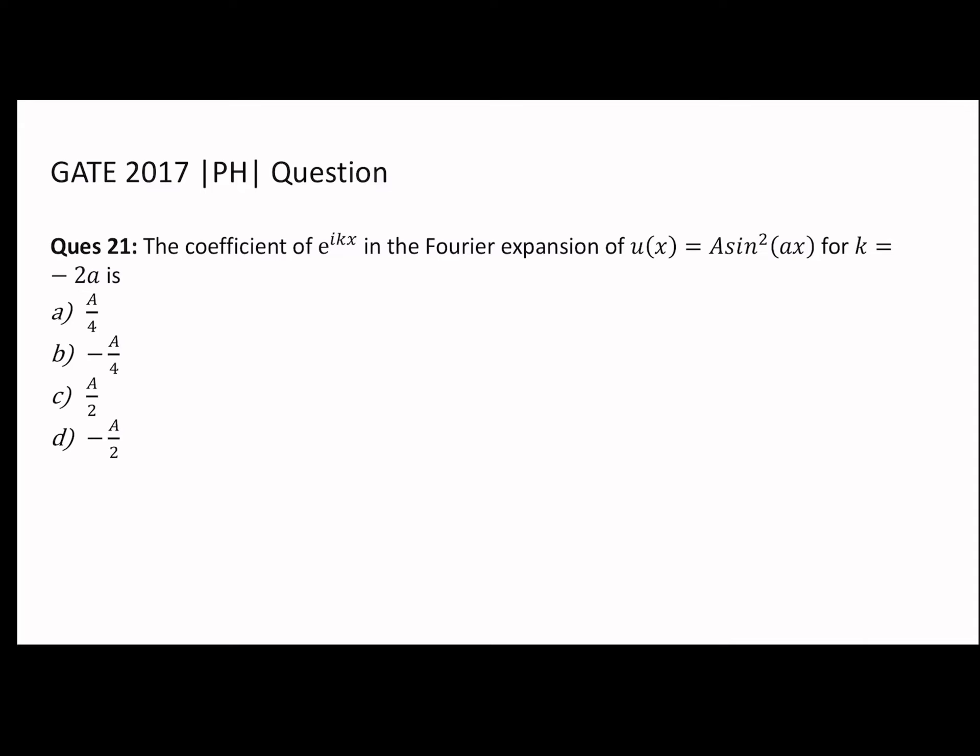Hello, in this video we are going to solve question number 21 of GATE 2017 Physics paper. The question is from the mathematical physics section. The coefficient of e^(ikx) in the Fourier expansion of u(x) = A sin²(ax) for k = -2a is: